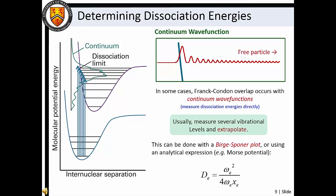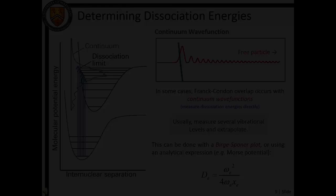By measuring a number of vibrational transitions associated with a range of V' excited state levels, we are able to extrapolate the data, or use an analytical model to determine excited state dissociation energy. In some cases, Frank-Condon overlap occurs with continuum wave functions just above the dissociation threshold. This facilitates direct measurement of dissociation energies.